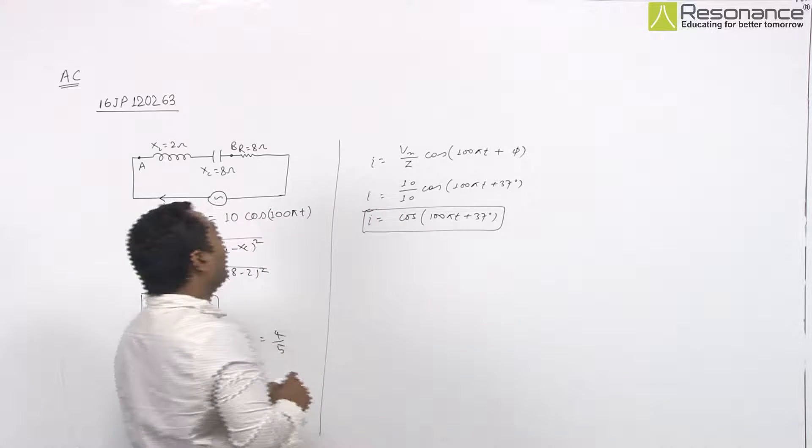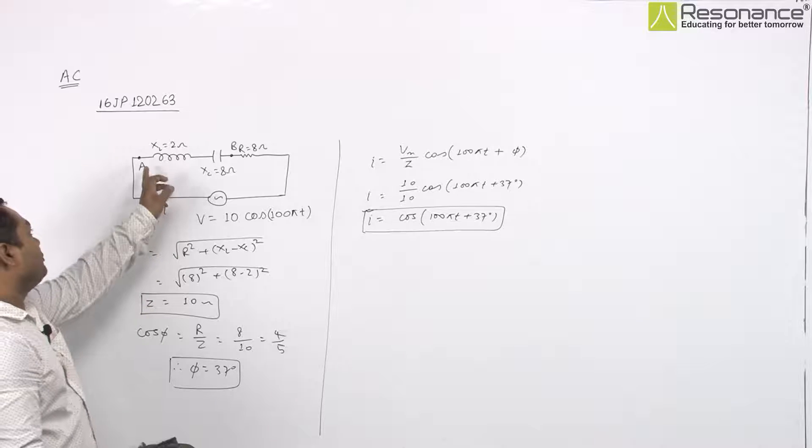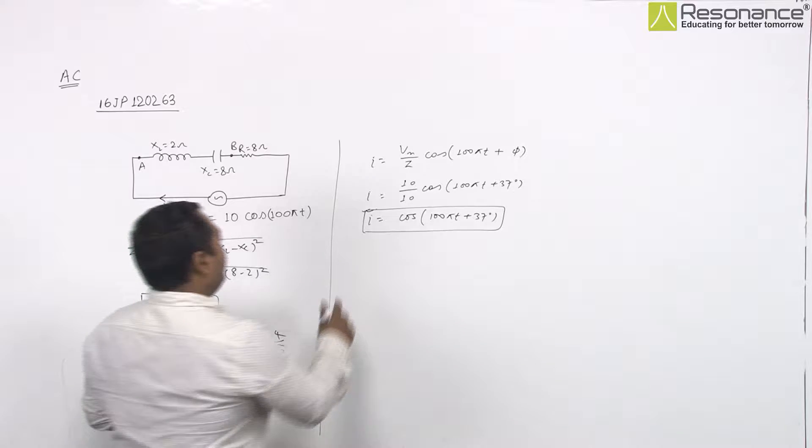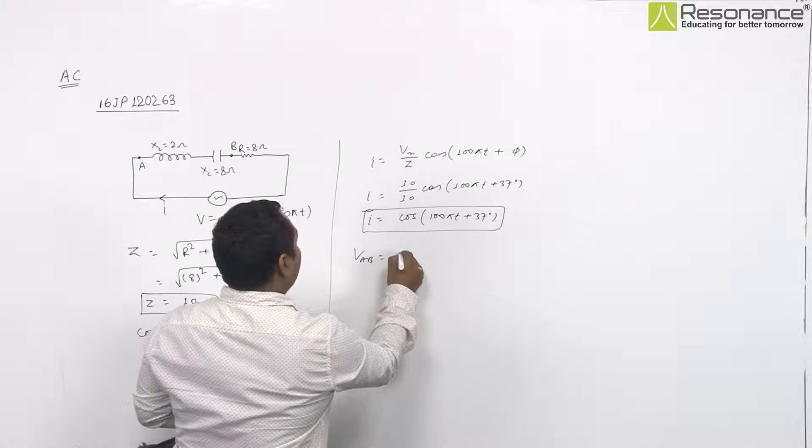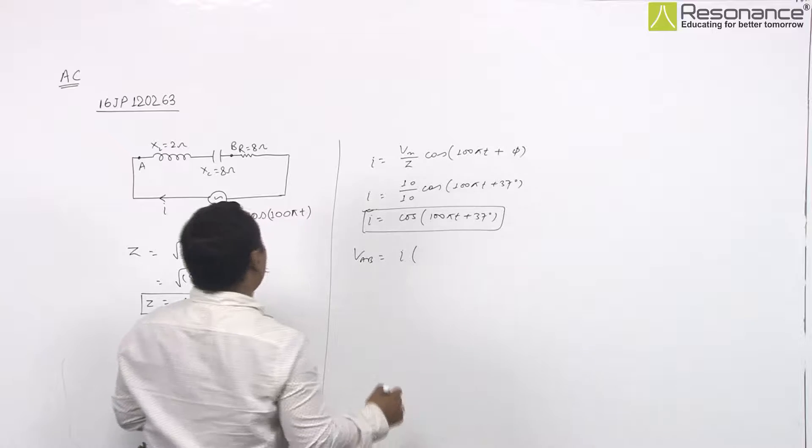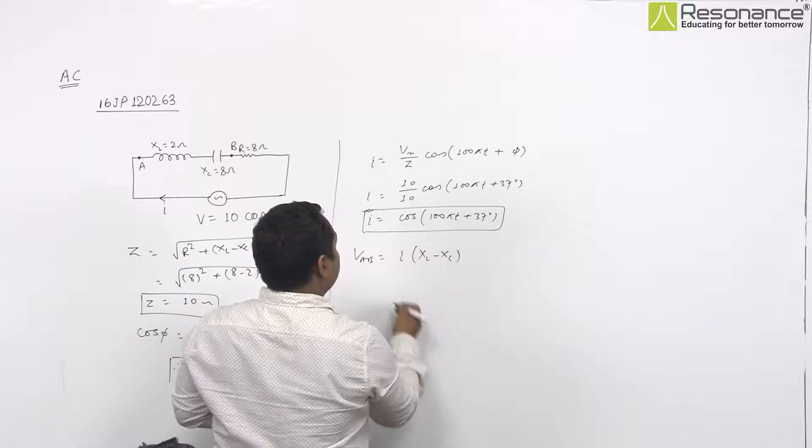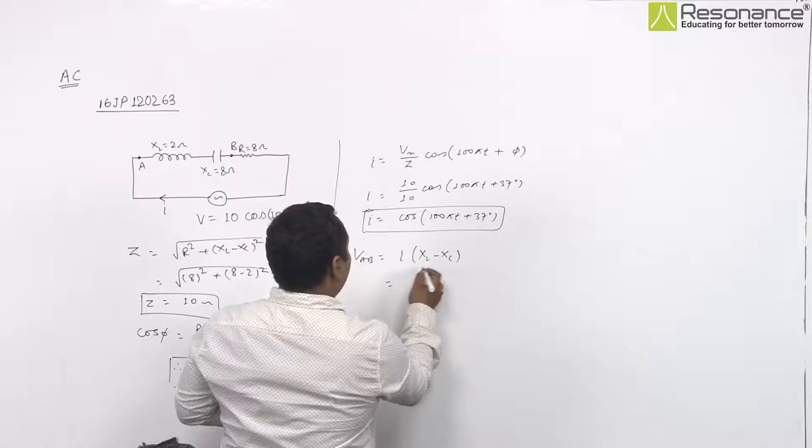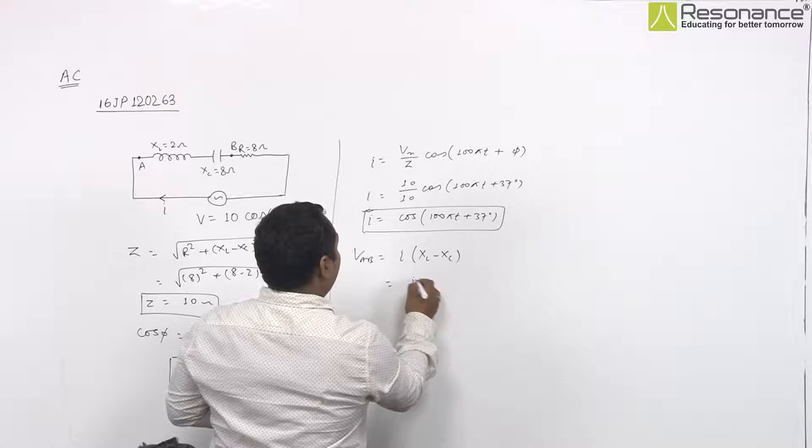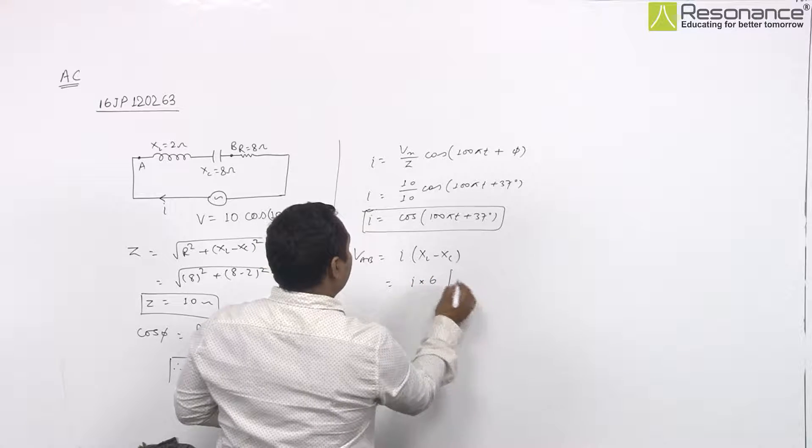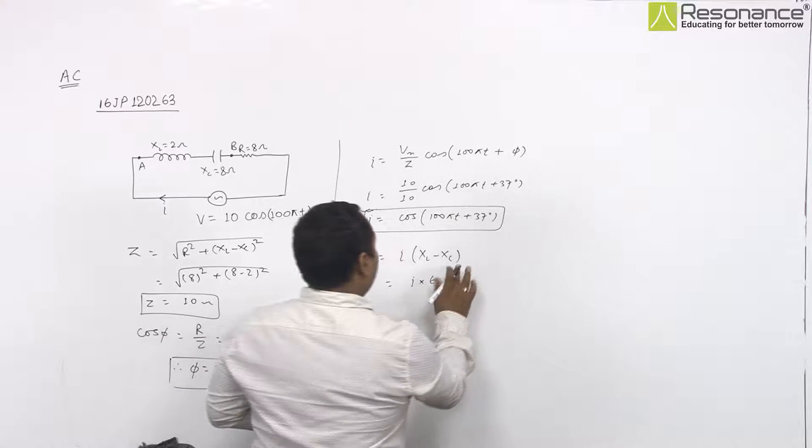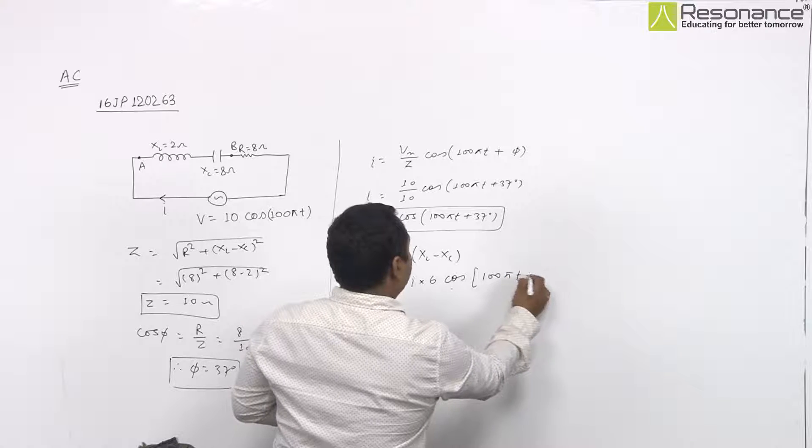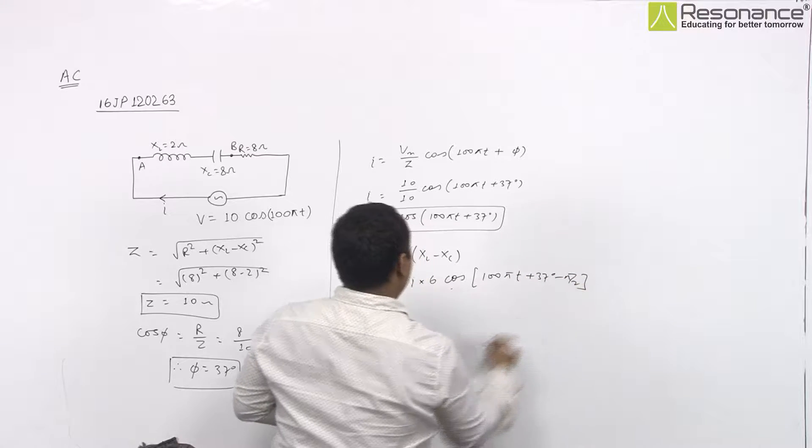Now, to find potential difference across A and B, it will be VAB equals I into XL minus XE. XL minus XE is negative, so it will be I into 6 into cos of 100 pi T plus 37 minus pi by 2.